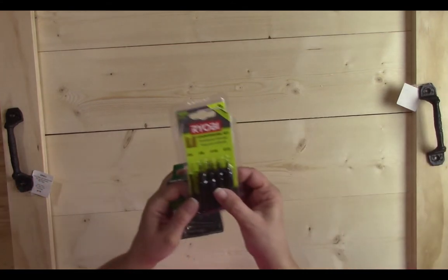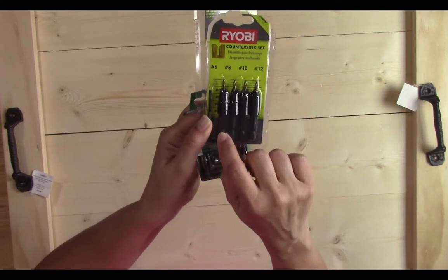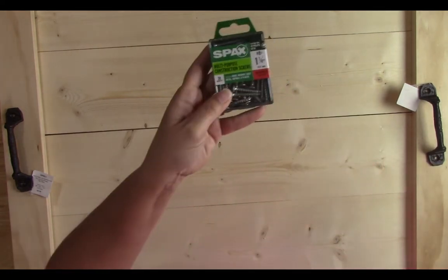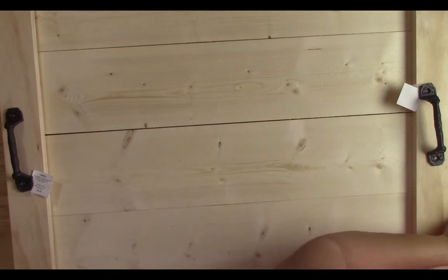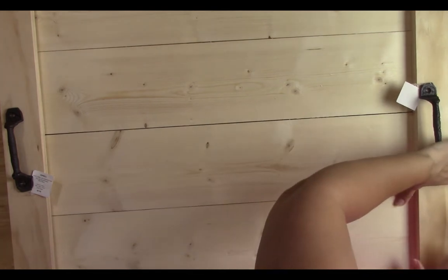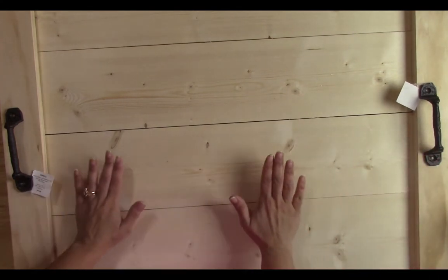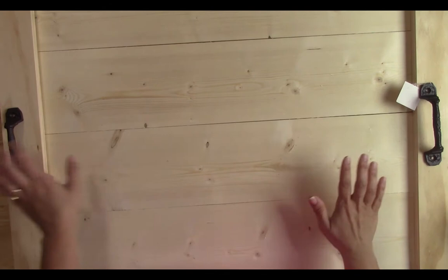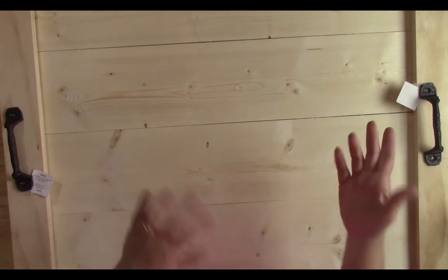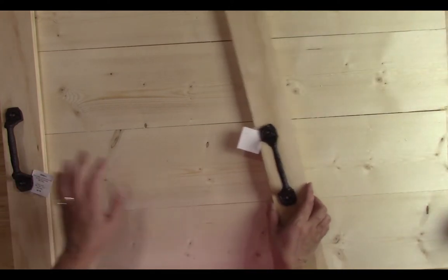I got a countersink set of bits from my drill and I'll explain that in a second, some screws and some wood glue. Now I'm going to go ahead and sand all of these pieces before I assemble and after I assemble just to get some of the rough edges smoothed out.